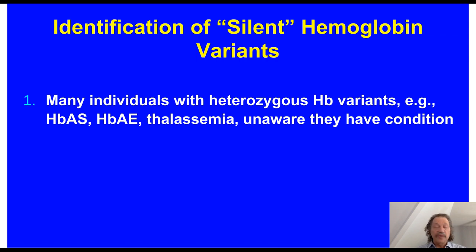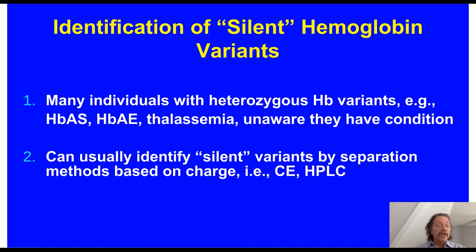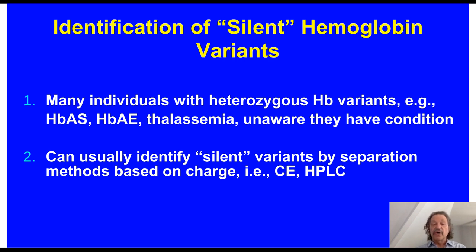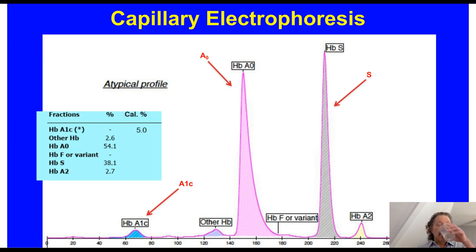Many individuals with heterozygous variants such as hemoglobin AS — sickle cell trait — AE, or thalassemia have no idea they have the condition. These silent variants can usually be identified using charge-based separation methods: capillary electrophoresis or HPLC. The NGSP website table shows which methods interfere with which common heterozygous variants — yellow indicates interference. Capillary electrophoresis is shown near the bottom, and none of the common variants interfere with it. An example tracing shows a patient heterozygous for hemoglobin S — the S peak in gray and the A0 peak in pink are clearly separated.